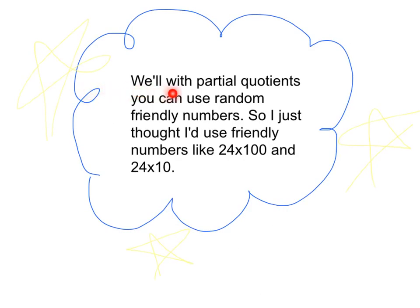With partial quotients, you can use random friendly numbers. I just thought I'd use friendly numbers, like 24 times 100 and 24 times 10. Because you don't need to find exactly how many times the divisor goes into the dividend.